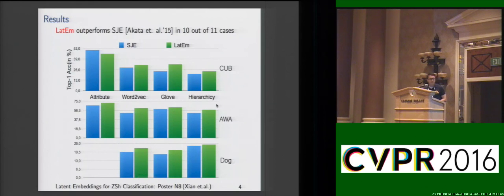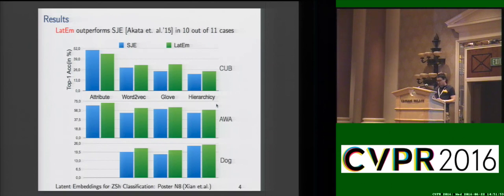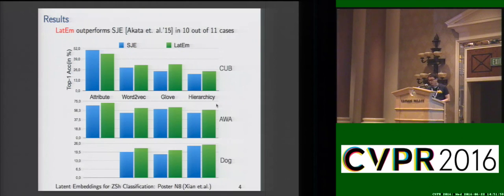We empirically evaluated our model on three public datasets with four different class embeddings, and this bar plot clearly shows that our model outperforms the state-of-the-art in 10 out of 11 cases.